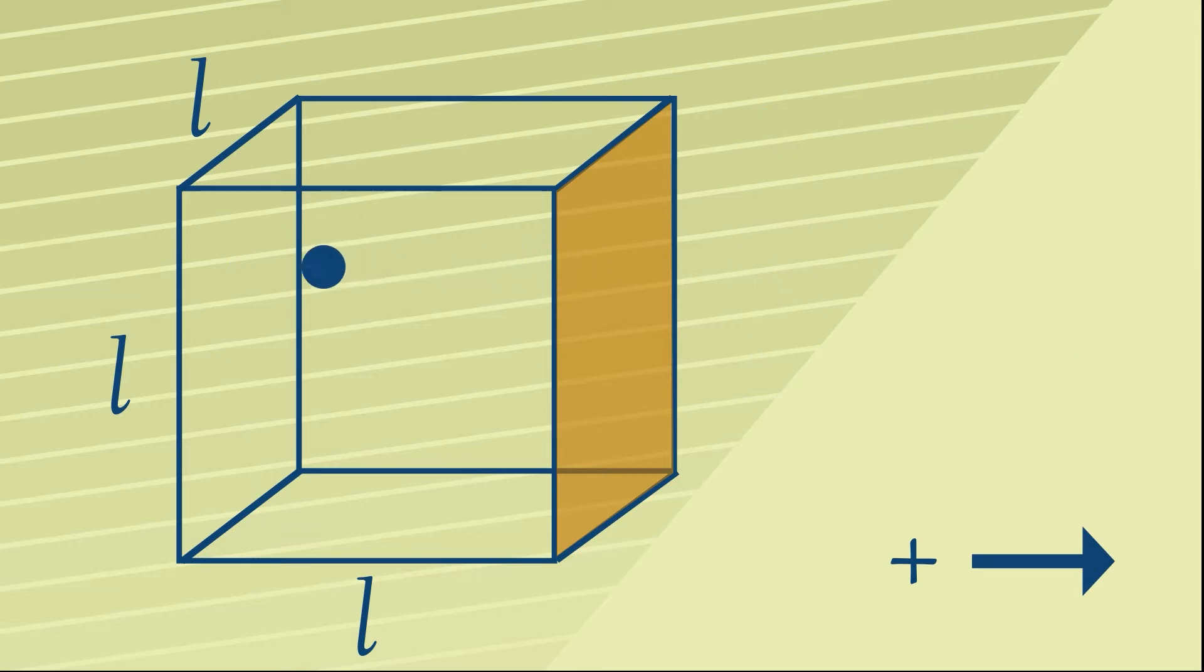Between each collision with the orange wall, the distance that the particle is going to travel will be 2 times L, from the orange wall to the other side and back again.